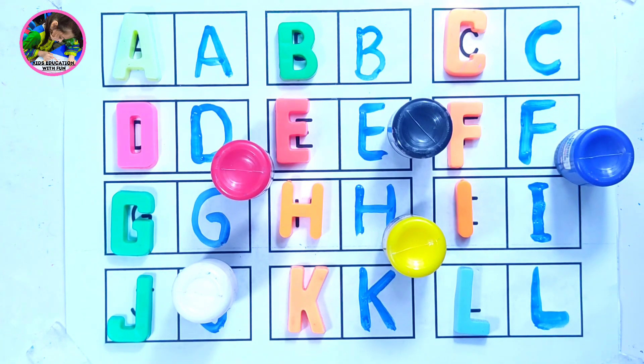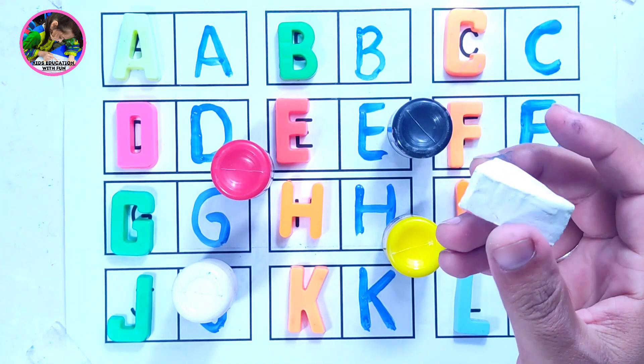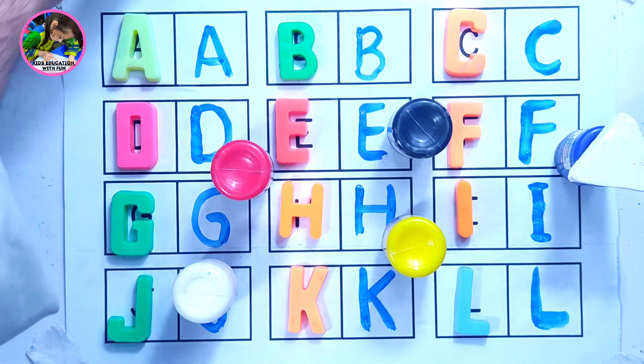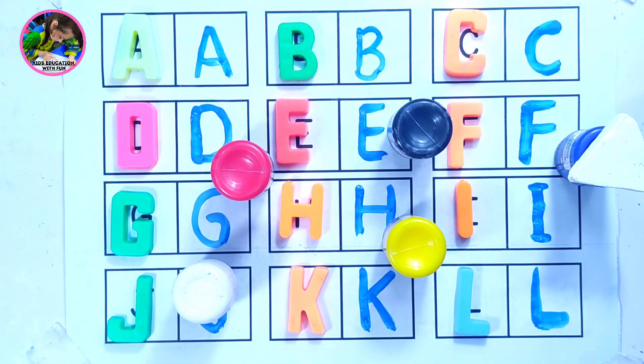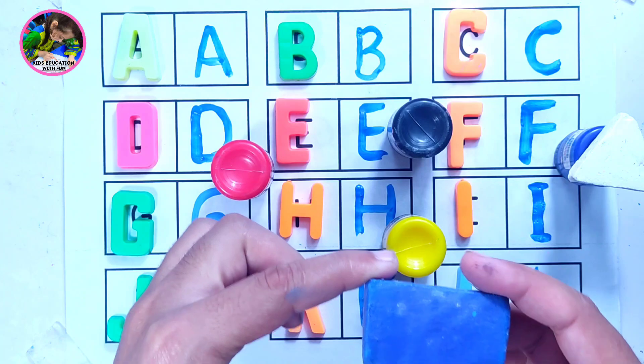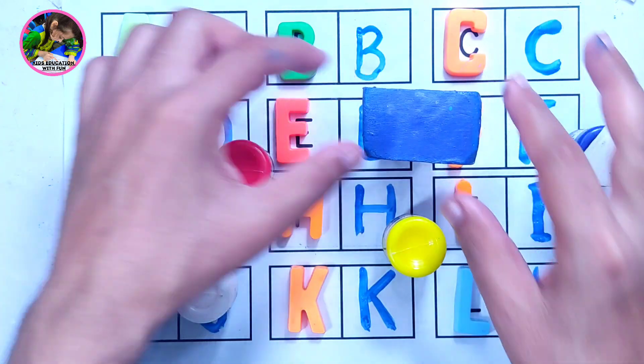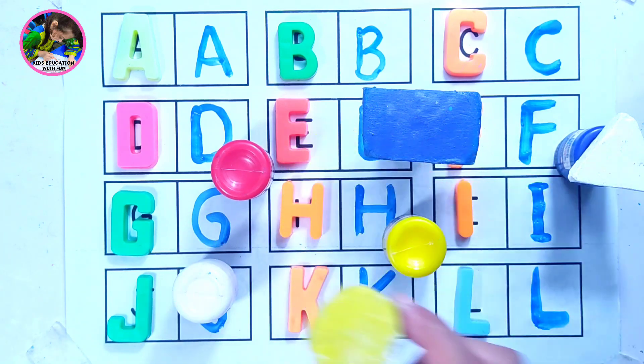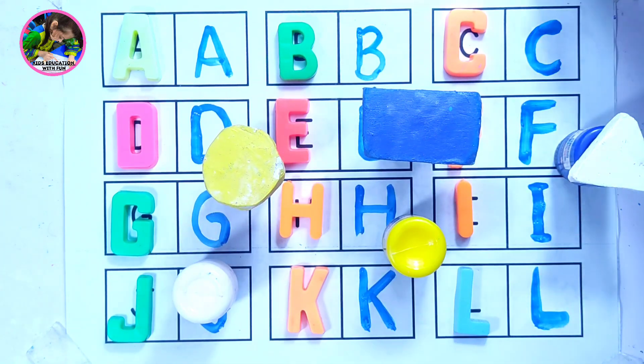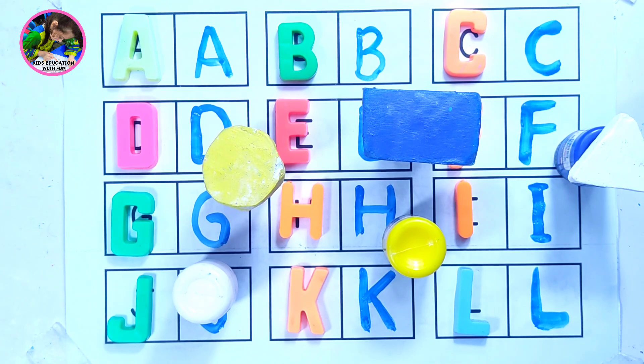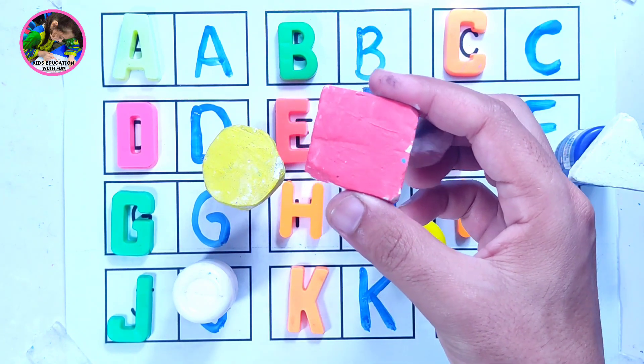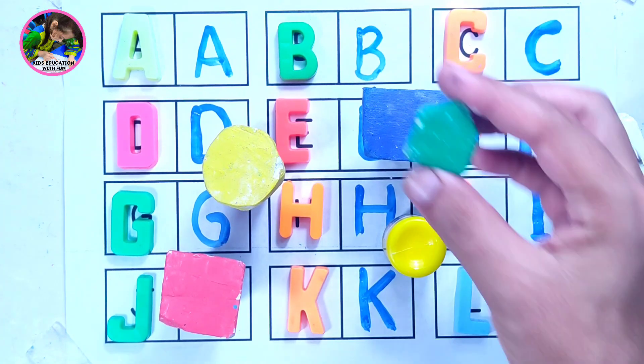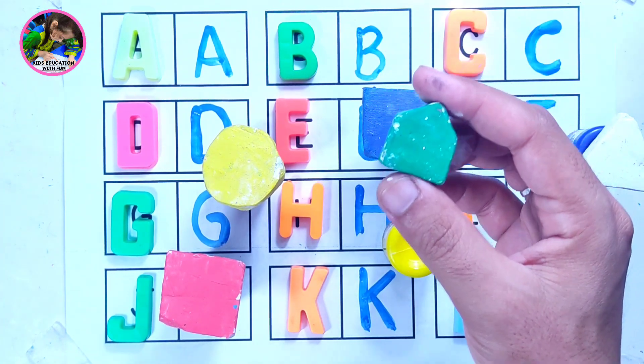Let's learn some shapes. This is a triangle. Another shape is rectangle. This is a circle. Here is a square. And this shape is a five-sided pentagon.